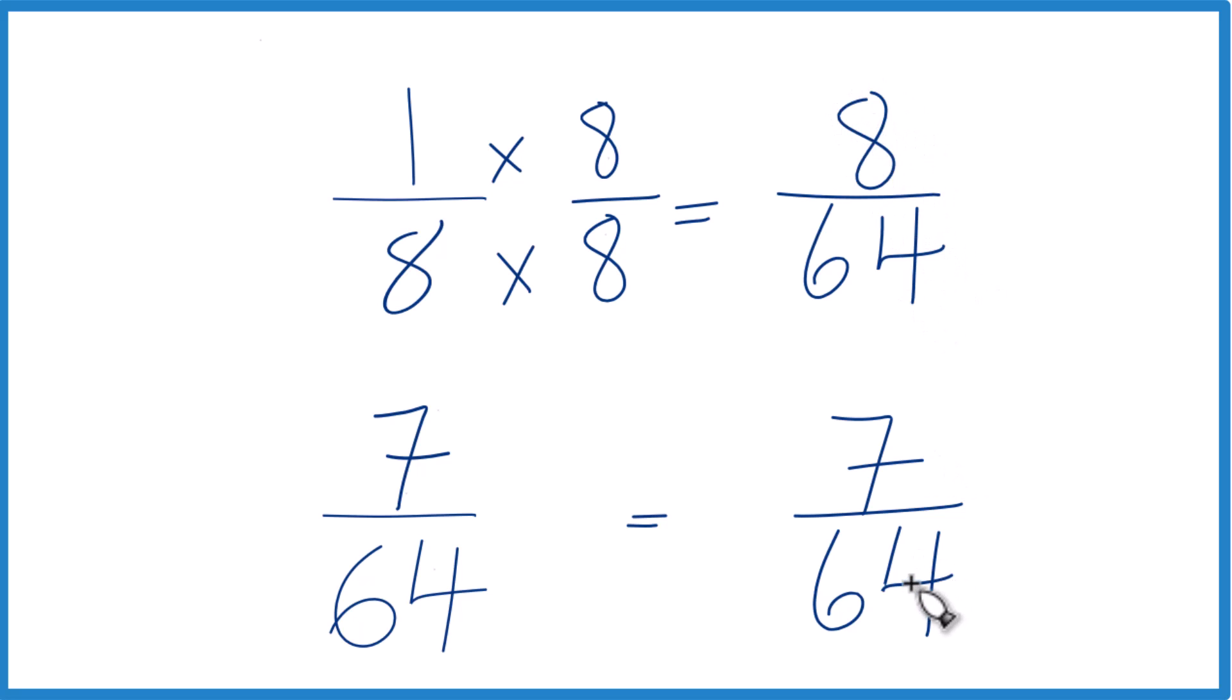Same denominator, compare the numerators. 8 is greater than 7, so 8/64ths is greater than 7/64ths, only by 1/64th.